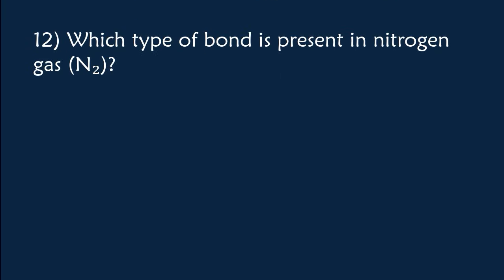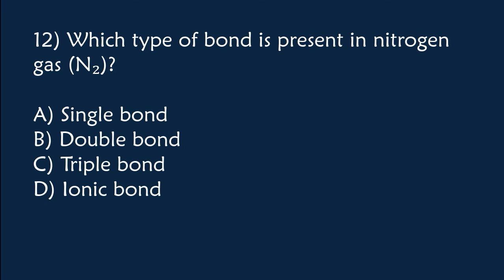Which type of bond is present in nitrogen gas? A) Single bond, B) Double bond, C) Triple bond, D) Ionic bond. The correct answer is Option C, triple bond.